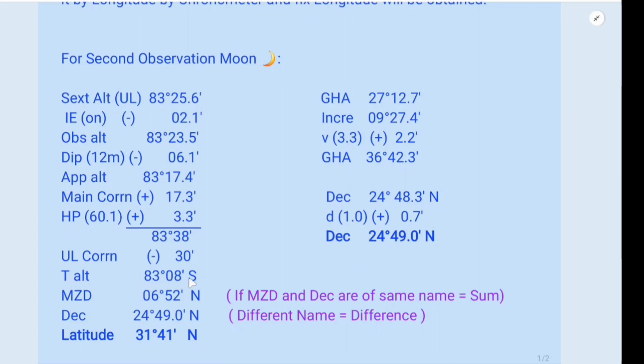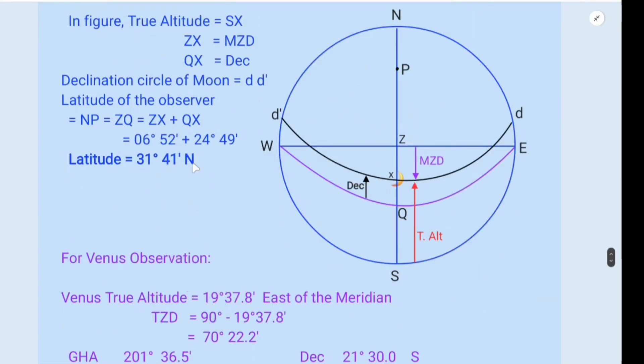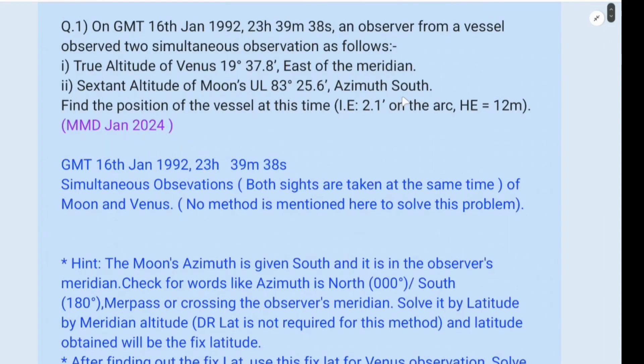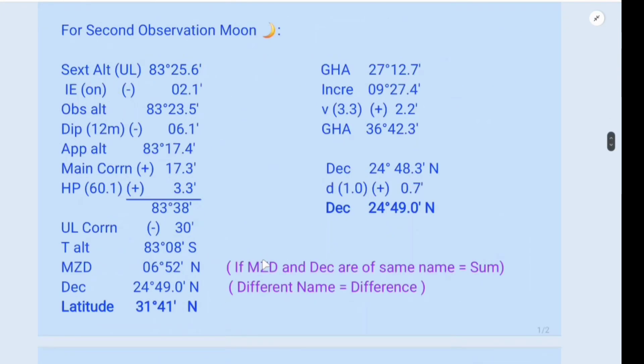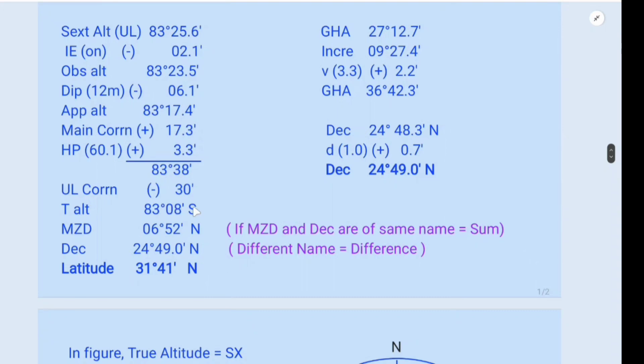Why I have taken true altitude as south is given in the question - azimuth south. So true altitude bearing will be south and MZD will be named opposite to it. And declination we have calculated here.